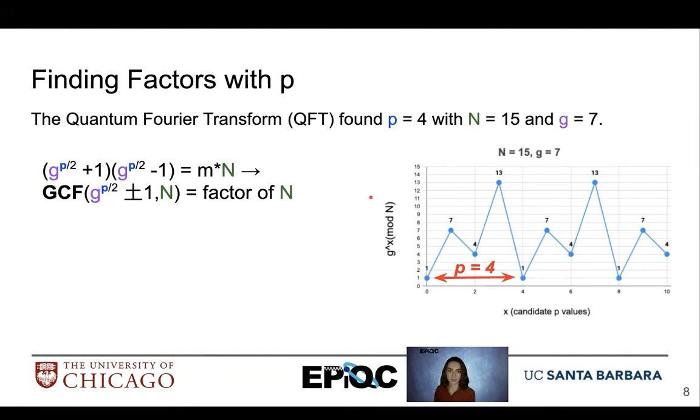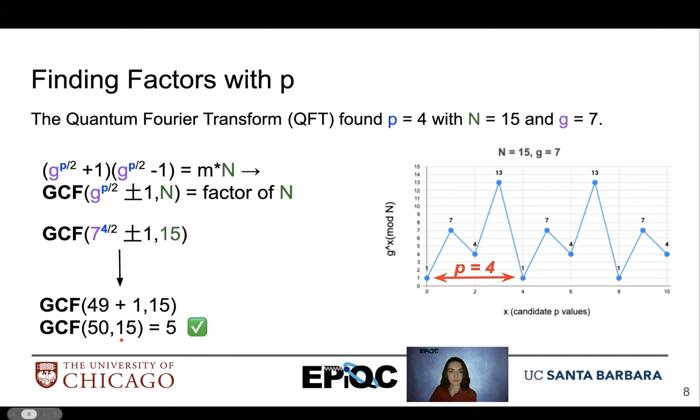So let's try this out. So 7 raised to 4 divided by 2, plus or minus 1, and 15, we'll use Euclid's algorithm to find the greatest common factor. We see that 49 plus 1, or 50, and 15, they share a greatest common factor of 5, so a factor of 15 has been found. And then if we do subtraction, 49 minus 1, and 15, 3. So another factor has been found.